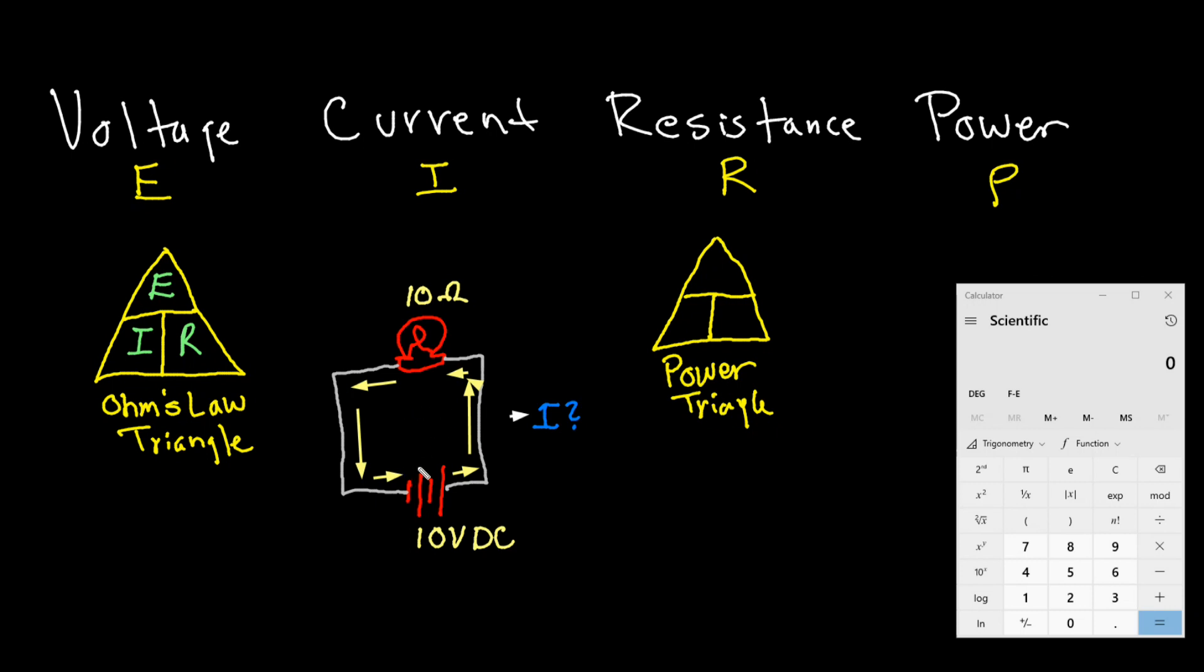So here is our simple circuit. Here we have a 10 volt DC battery. Here we have my crude drawing of a light bulb that has a 10 ohm resistance. You can see the direction of the current flow. What we want to solve for is the power in this circuit, but we need to know the current first. How are we going to figure this out? We need to know I, our current, so that is E divided by R.